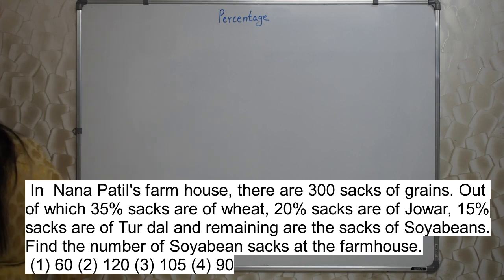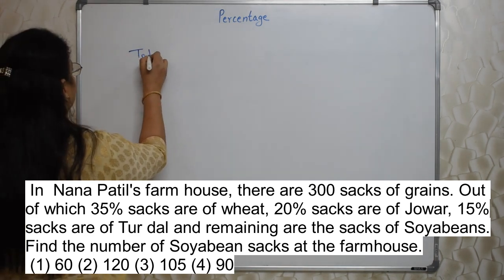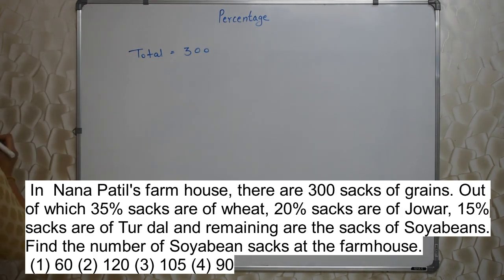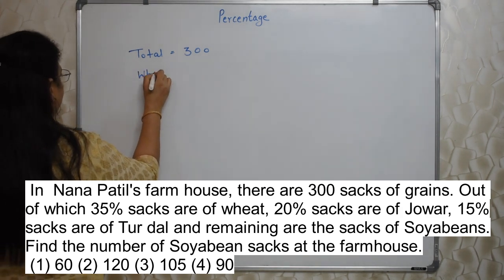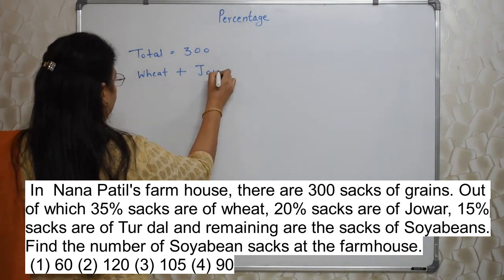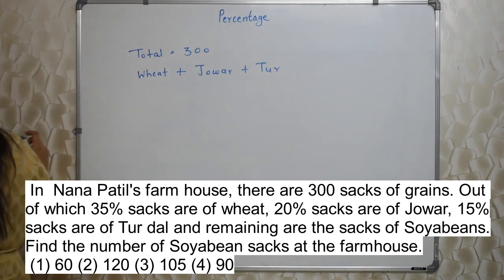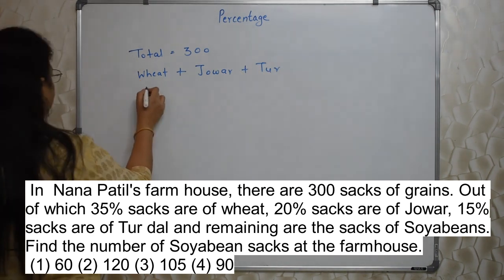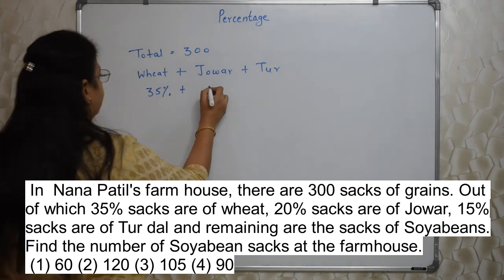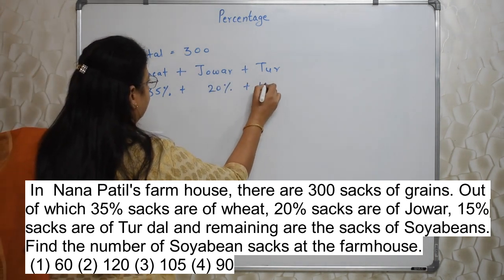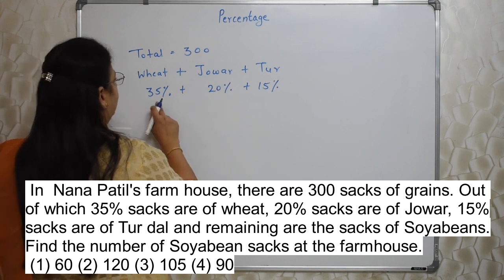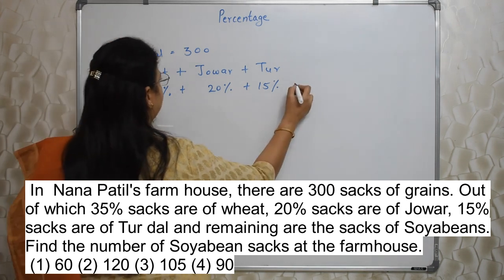Total sacks are 300. Wheat, jawar, and tur — everything is given in the form of percentage. So let's add those percentages: 35% plus 20% plus 15%. Since everything is in percentage, we can simply add them. So 35 plus 20 plus 15 is 70%.